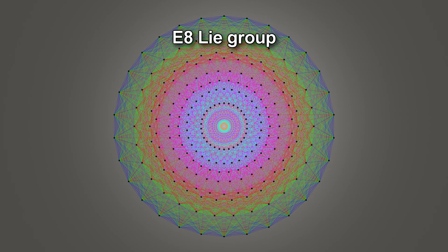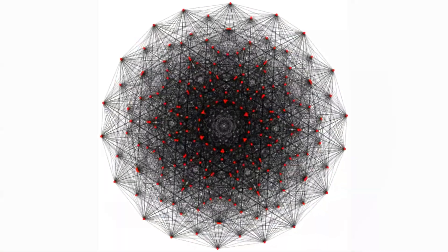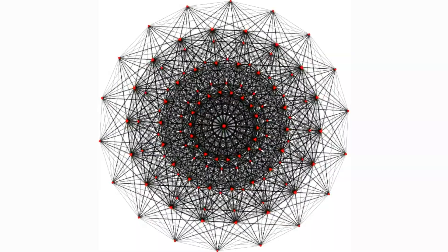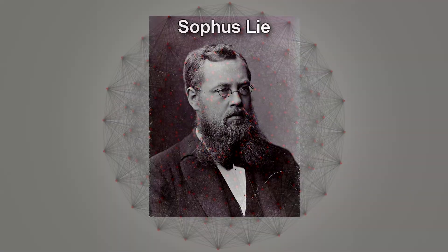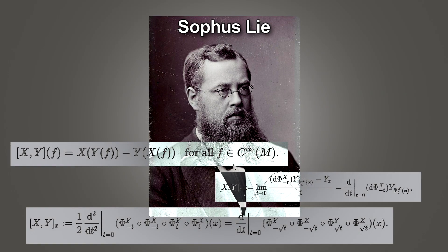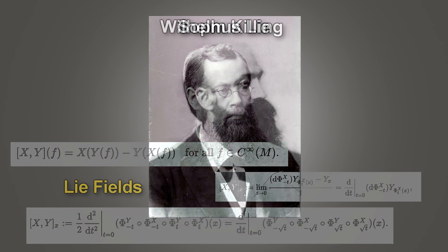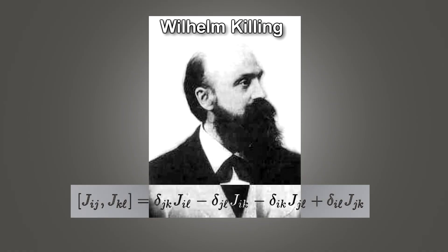This structure is called an E8 Lie group. It's actually a 248-dimensional object, but it can also be thought of as an object that has eight spatial dimensions with 248 symmetries. In the 19th century, the mathematician Sophus Lie created algebraic formulas to describe the shape of symmetrical objects — these are called Lie fields. And then in the late 1890s, Wilhelm Killing found a set of Lie fields that described perhaps the most complex shape in our universe: the E8 group.